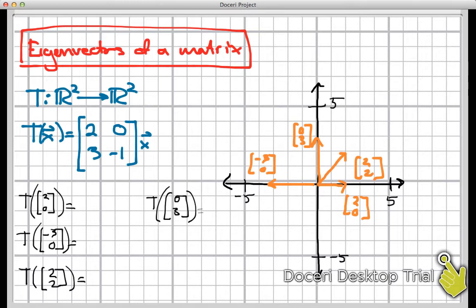T of (2,0). Well, that would mean I'm going to need to take the matrix [2, 0, 3, -1] and multiply that to (2,0). And let me just pull this up here for a moment so I don't run out of room. And the vector that I get as an output would be 2 times 2 plus 0 times 0, that's a 4. And then 3 times 2 plus -1 times 0, that's a 6. So (4,6) is my output.